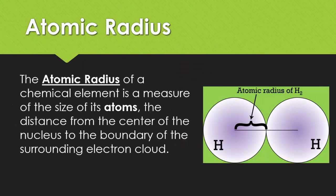Atomic radius of a chemical element is a measure of the size of the atoms, the distance from the center of one nucleus to the boundary of the surrounding electron cloud. The way they do this is they actually measure the distance from nucleus to nucleus and then cut that in half.